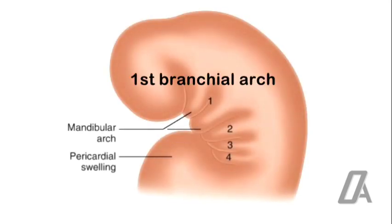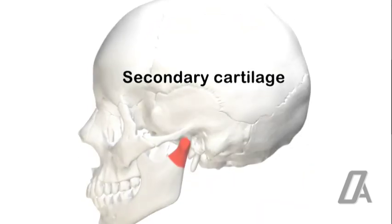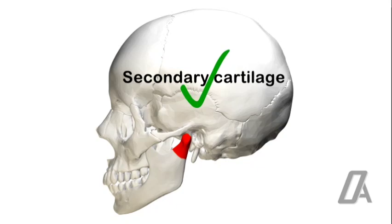The condylar cartilage develops from mesenchymal cells unrelated to the first branchial arch. It is therefore referred to as secondary cartilage, since its formation is secondary to the original primordial cartilage.